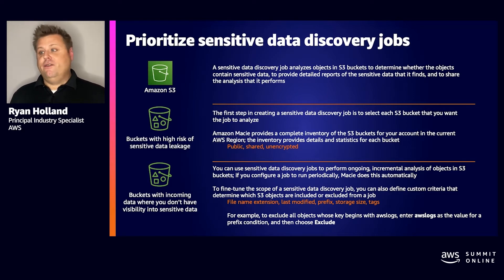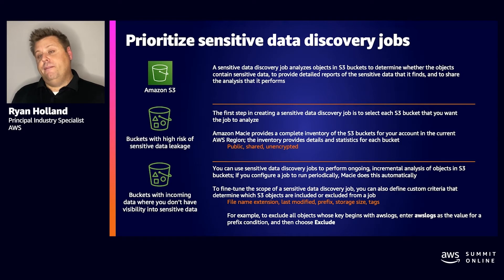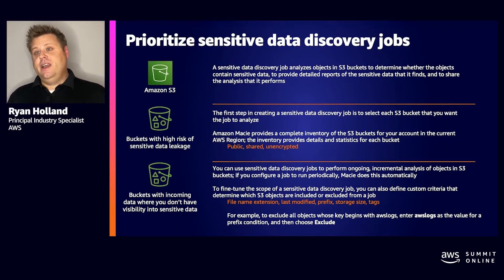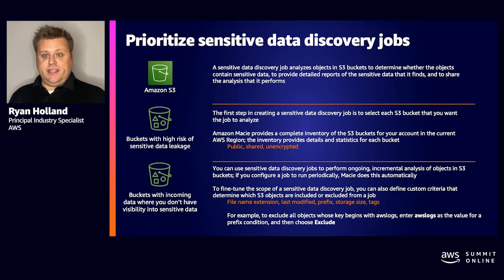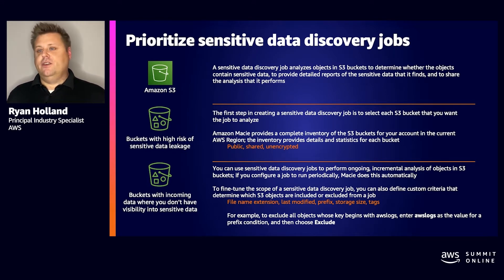The public bucket use case is a no-brainer for a lot of customers. There's an easy way in the console to see all your public buckets across all accounts in your organization and create a job to perform sensitive data discovery on those. You might also want to consider buckets shared or replicated to an external party. If you leverage tags in your S3 environment, you can filter and search based on those tags to inform which buckets to scan. Logging buckets such as flow logs or S3 access logs are good candidates to exclude, as they don't yield very good results and are just text-based log data.